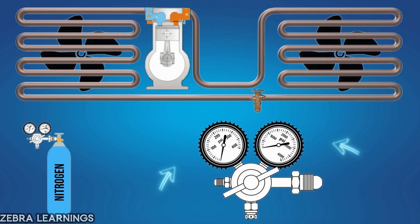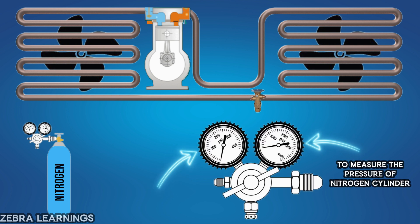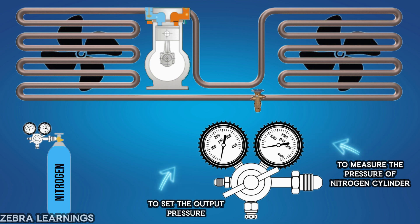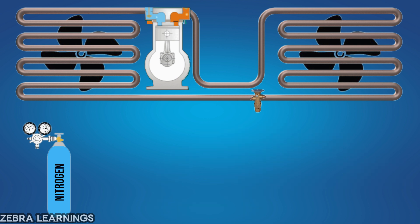The regulator has two gauges. One gauge is used to measure the amount of nitrogen gas remaining in the cylinder. The other gauge is used to set the pressure that will be applied to the AC unit. After connecting the regulator to the cylinder, now connect the manifold gauge.